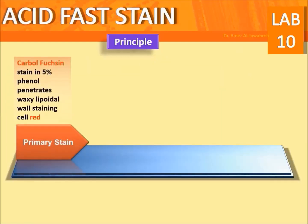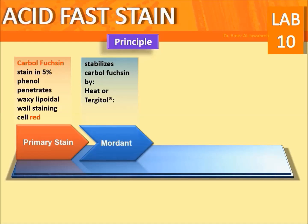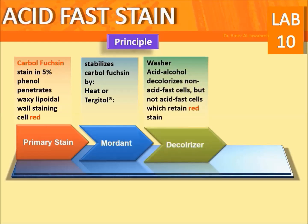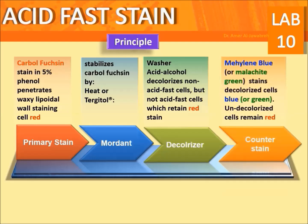Primary stain: Carbolfuchsin in 5% phenol penetrates the waxy lipoidal wall, staining the cell red. Mordant: Stabilizes carbolfuchsin by heat or tergitol. Decolorizer: Acid alcohol decolorizes non-acid fast cells but not acid fast cells, which retain the red stain. Counter stain: Methylene blue or malachite green stains decolorized cells blue or green; undecolorized cells remain red.